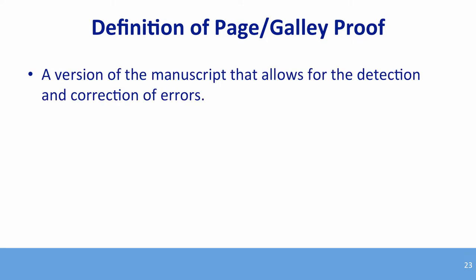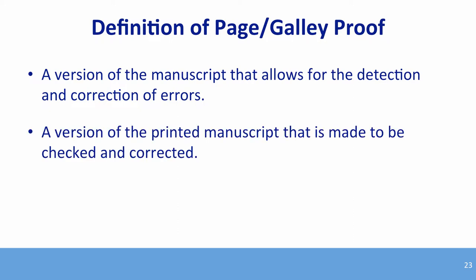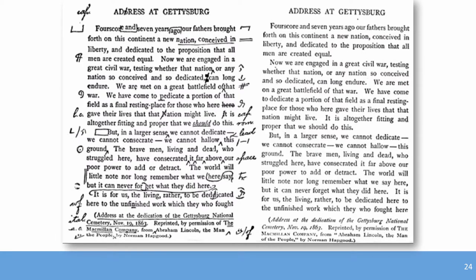Galley proofs — also called page proofs — are the version sent to an author so they can see what the final version will look like. They allow for minor corrections such as punctuation or syntax before the journal finalizes the article. They are essentially a snapshot of what will appear online. This version cannot be deposited because it already falls under copyright.